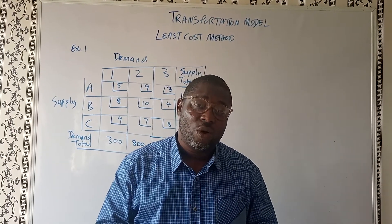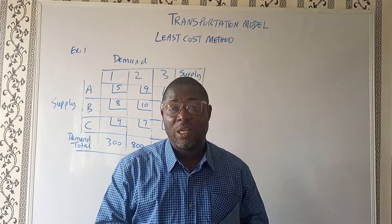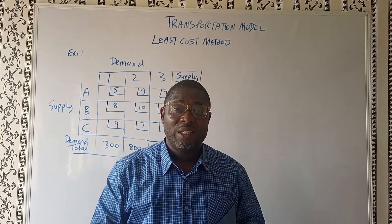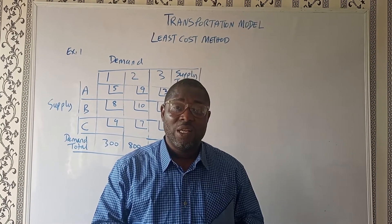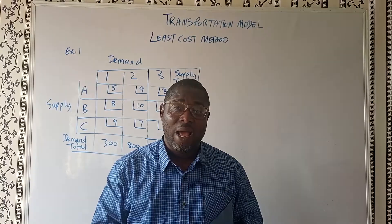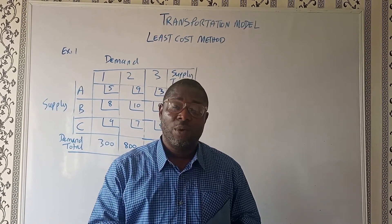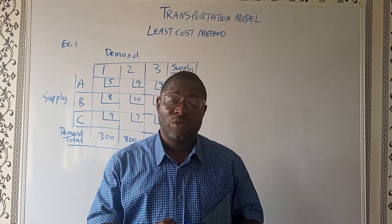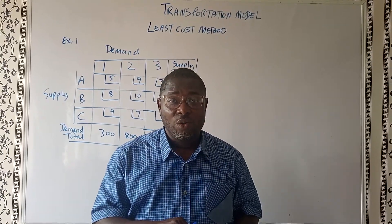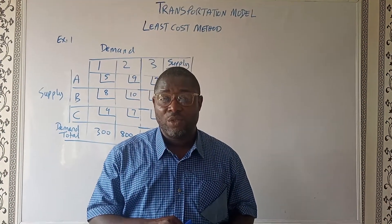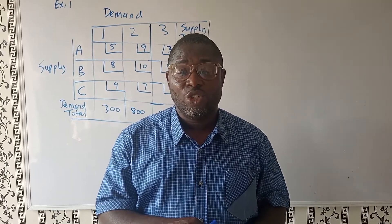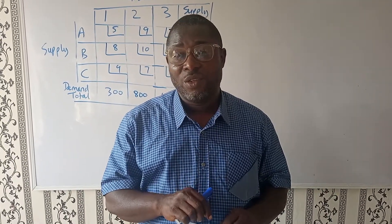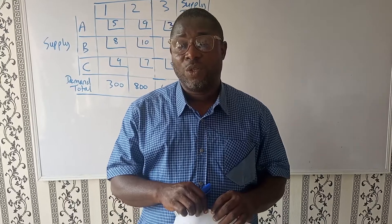Some texts will have it as the least cost cell method, but I prefer to call it the least cost method. In this method, we will identify the location with the least unit cost and apply the volume of commodities or supply into those cells, depending on the demand and supply, and then look for the next least cost until all the demands and supplies from the factory to the centers or from the plant to the distribution points are exhausted.